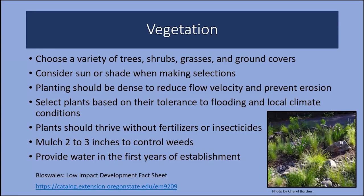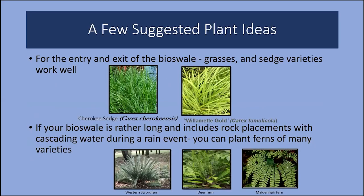Mulching with fine to medium bark — not bark chips since they float — or compost at two to three inches will keep the soil cool and help with erosion. You can also plant ground cover on the slopes. Select plants that have visual appeal and add to your landscape. You will need to water during the hot summer months, at least during the first year of establishment. For the entry and exit space of your bioswale, grasses and sedge varieties work well — they slow down the water, look attractive, and can withstand high wet conditions.